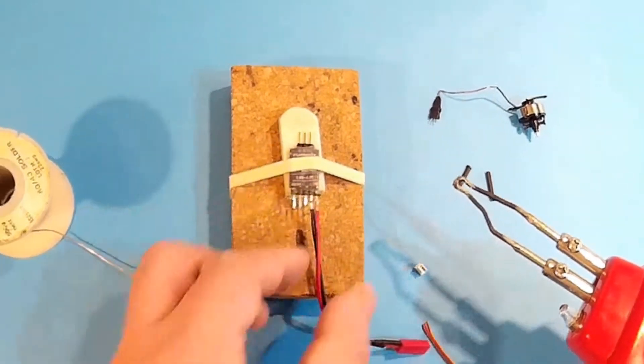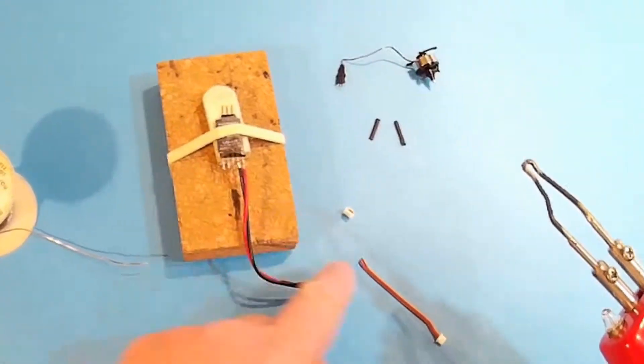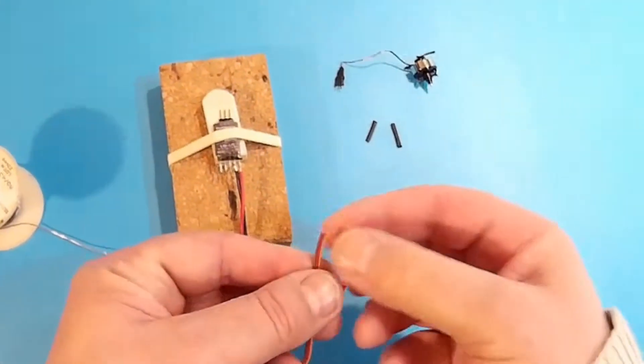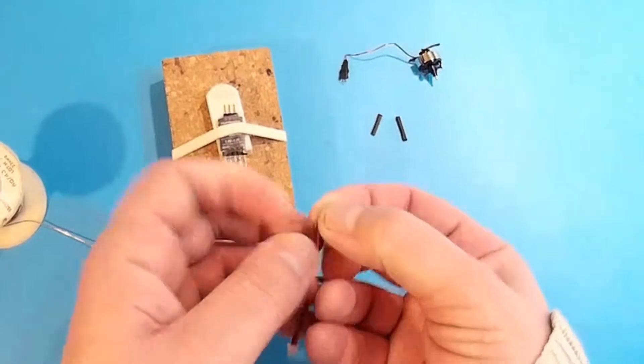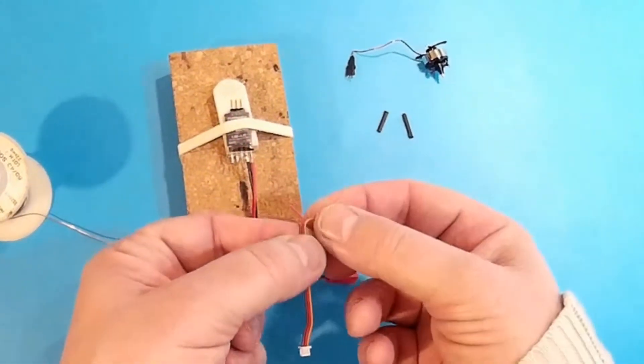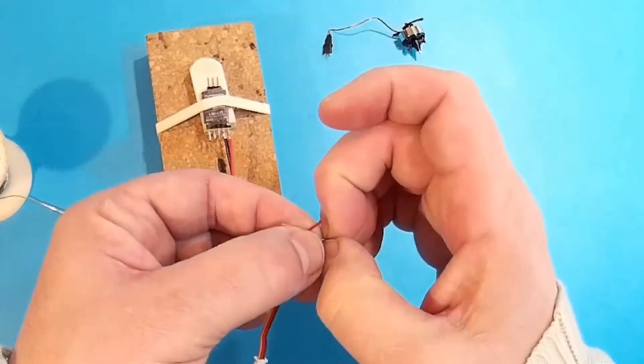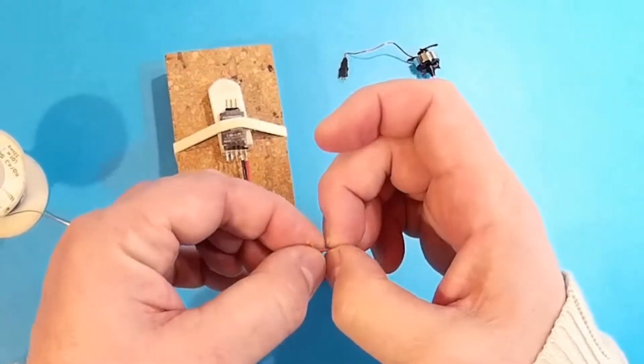Now I'm going to just pull these ends off, hold them onto there, and then I'll need the heat shrink. The three colors are obviously red, the center one here. Orange is positive. Orange is the signal. And brown is the negative.